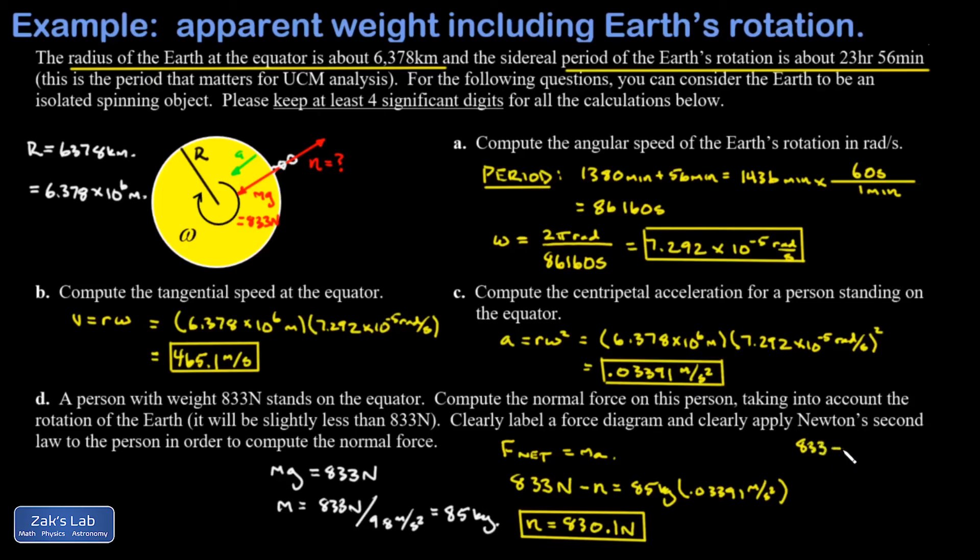It's interesting to express this as a percentage. My weight is 833, my apparent weight—that's the normal force, that's how hard the ground pushes up on your feet—that's 830.1. To express a percent reduction in your apparent weight, I would set it up like that: 833 minus 830.1 over 833, and it's about a 0.3 percent reduction in your apparent weight compared to standing on one of the poles.